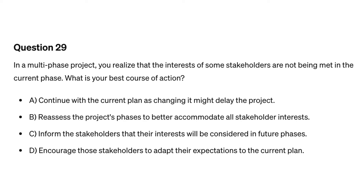Question twenty-nine. In a multi-phase project, you realize that the interests of some stakeholders are not being met in the current phase. What is your best course of action? A. Continue with the current plan as changing it might delay the project. B. Reassess the project's phases to better accommodate all stakeholder interests. C. Inform the stakeholders that their interests will be considered in future phases. D. Encourage those stakeholders to adapt their expectations to the current plan.